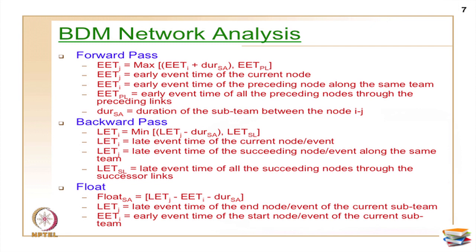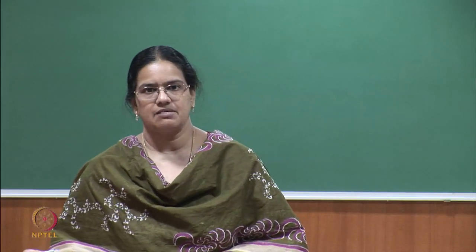Now let us move on into analysis, because you are more worried about how to do scheduling with information exchanges. Same way as your earlier network analysis, you will have forward pass, backward pass, and float. In the BDM network analysis, just like your regular network analysis, you can do two ways of analysis: activities can be interrupted, or activities can be contiguous. In the particular method I am going to explain with an example, we are assuming the activities are interruptible, which implies the activities can be broken down as and when progress happens and the critical path is accordingly calculated.